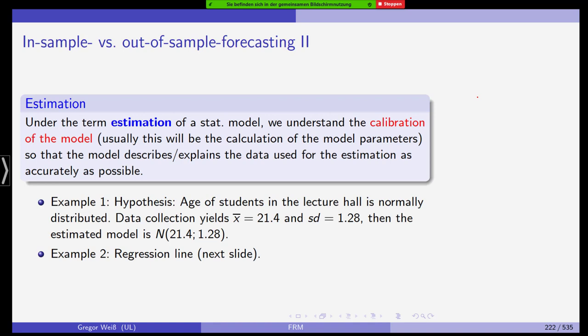When we estimate a model, a statistical model, this is the calibration of the model to the data. Usually this will be the calculation of the model parameters such as the expected value or the volatility or the kurtosis, so that the model explains the data used for the estimation as accurately as possible. First example is hypothesis. The age of the students in the lecture hall is normally distributed. We collect the data and if we calculate the sample mean and the sample standard deviation, we would get 21.4 and 1.28. Then our estimated model is N(21.4, 1.28).